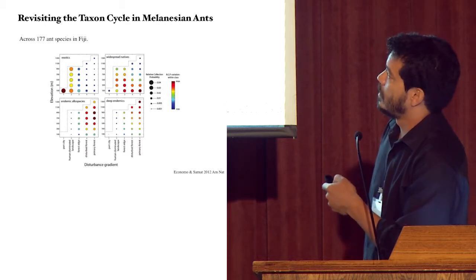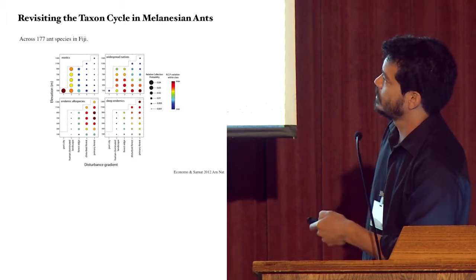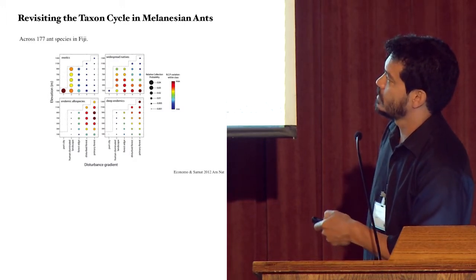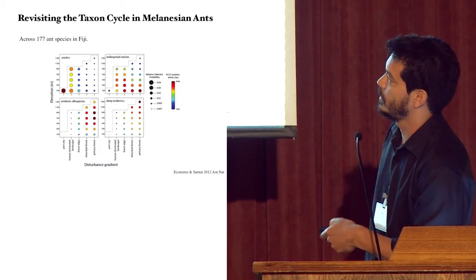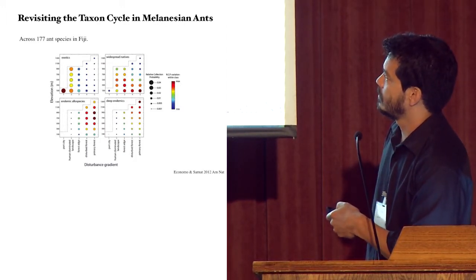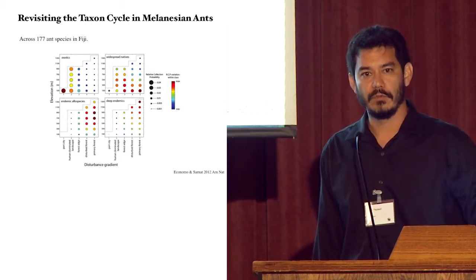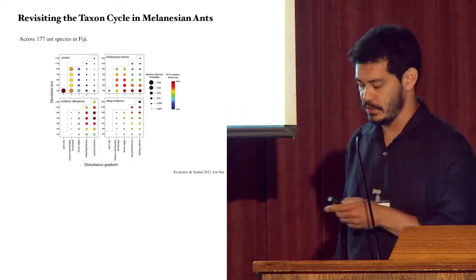And so these guys take a generally similar approach. They divide their ant species into four general categories. You have exotics. These are things that have a native range somewhere well outside of Melanesia. They've been introduced. These are our tramp ants or pest ants or invasive ants, whichever term you choose to use. Widespread native. So these are things that have evolved elsewhere and spread into Melanesia. We have endemic allele species. So these are species that evolved within Melanesia and speciated there. And then deep endemics. These are things that seem to be historical relics from previously more widespread, more species-rich groups.